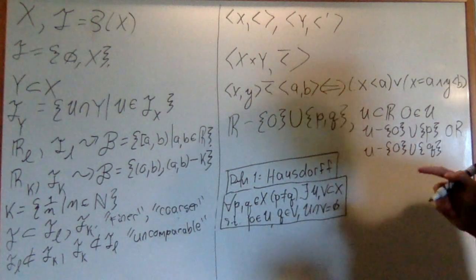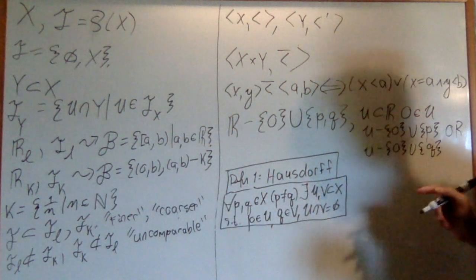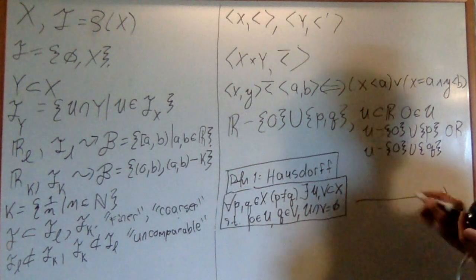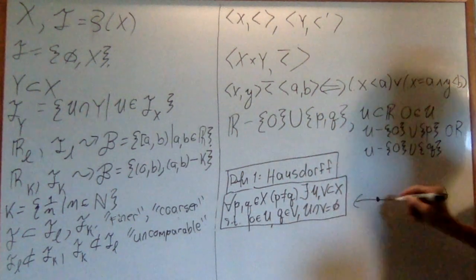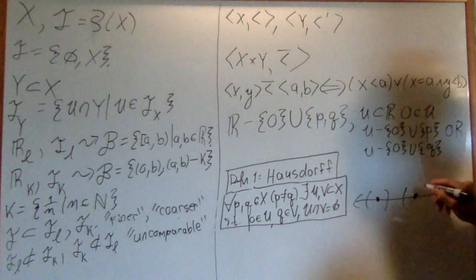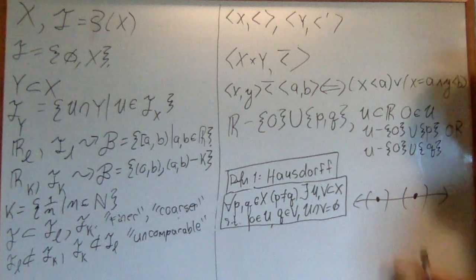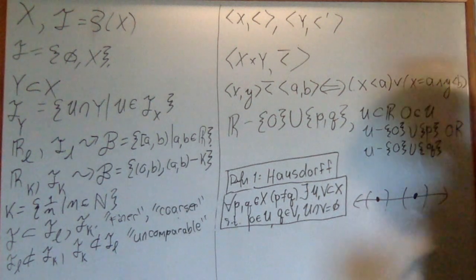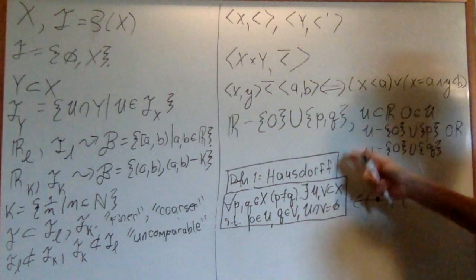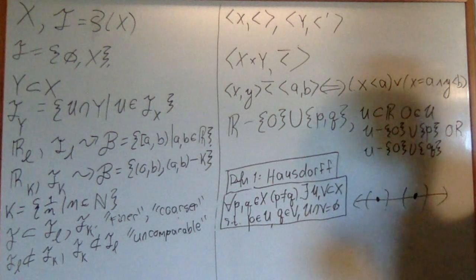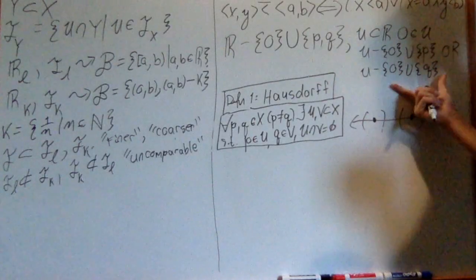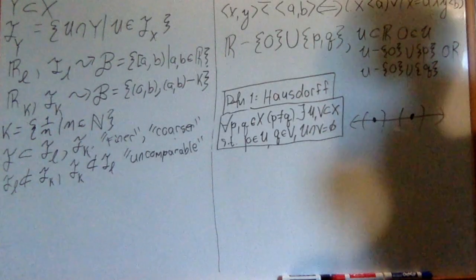This is actually very important for analyzing the structure of topologies. So what it says is that I have a point, and I have a distinct point. I can find two intervals around these points that do not intersect. So this is actually a very important topological property. Hausdorff is one of the most important topological properties you can have. The line with two origins doesn't have the Hausdorff property.